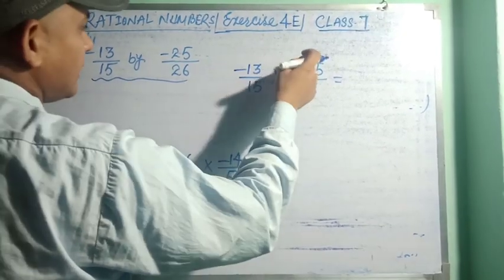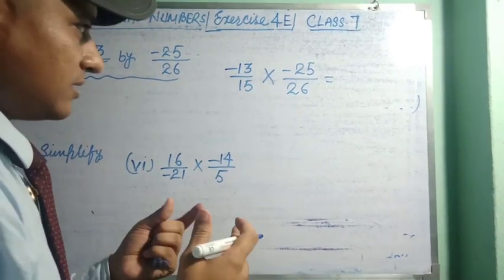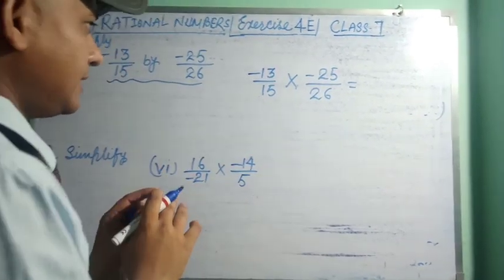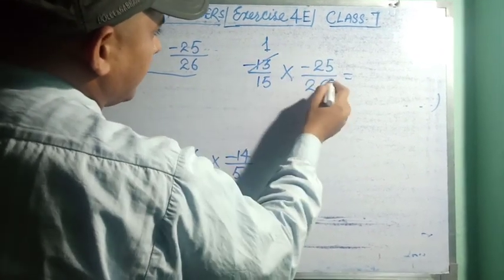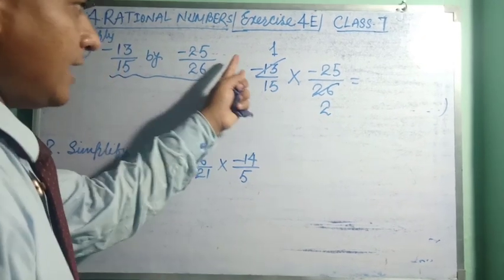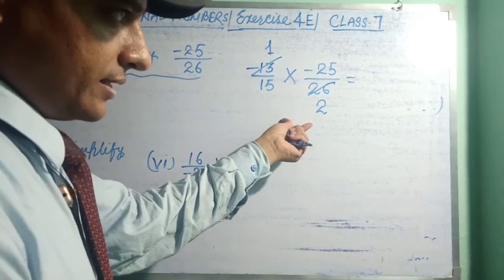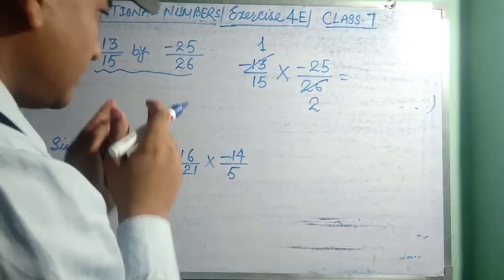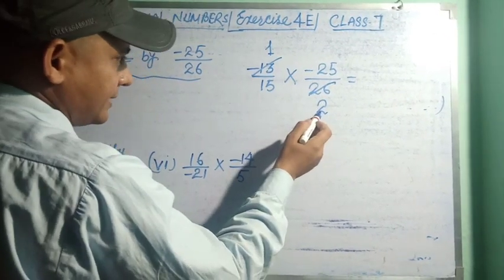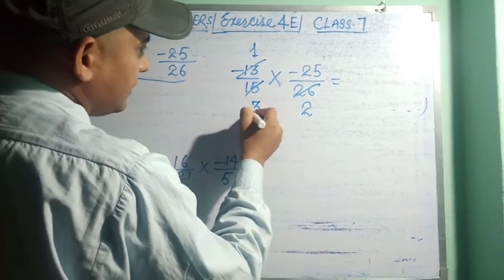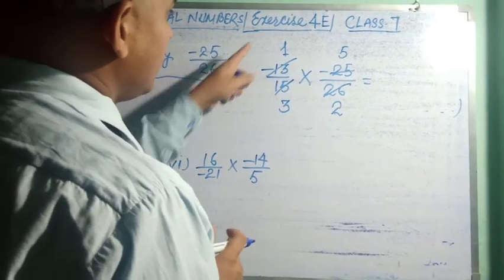We multiply numerator into numerator and denominator into denominator. If cancellation is possible, we cancel first. Here, 13 goes into 13 once, and 13 goes into 26 twice. Similarly, 5 goes into 15 three times, and 5 goes into 25 five times.